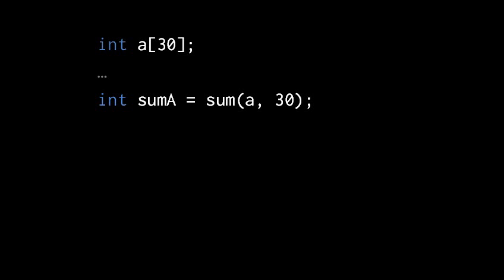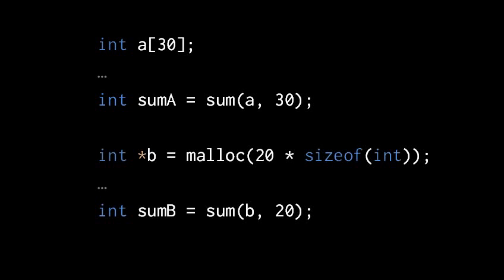We don't have to pass in an array though. We can allocate here a block of 20 ints, then we presumably give values to those ints, and then we call sum with the argument b and then 20.